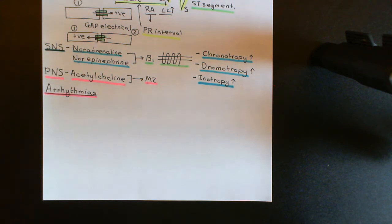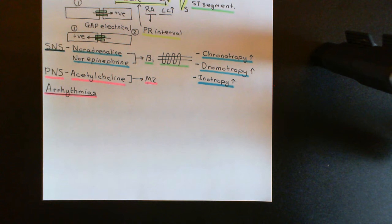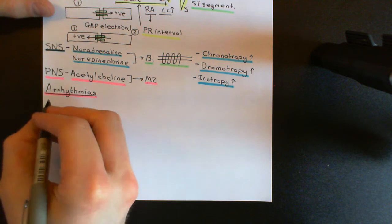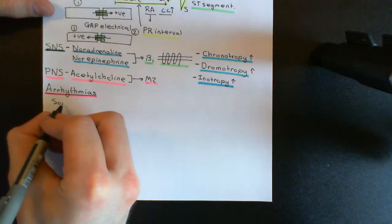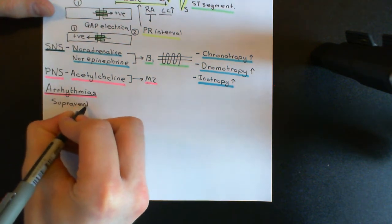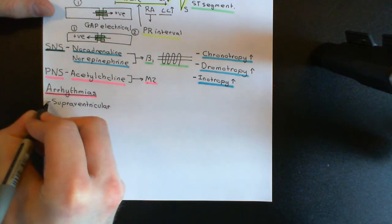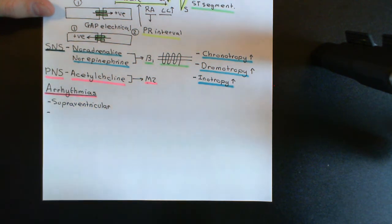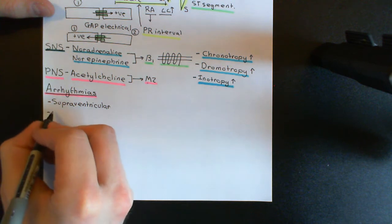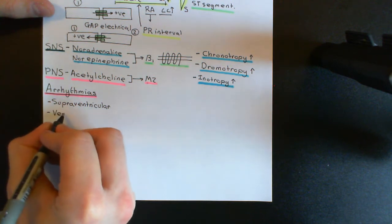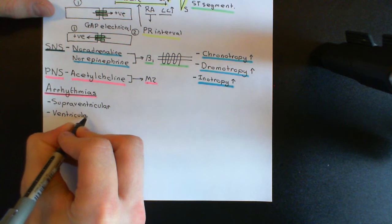Then what we'll talk about is the symptoms of arrhythmias, and then I'll give you an overview as to how we're going to work our way through the different arrhythmias and talk about the different treatments of cardiac arrhythmias. So firstly, let's talk about the difference between supraventricular arrhythmias and ventricular arrhythmias - the two broad categories that are the main way I'm going to organise our discussion.